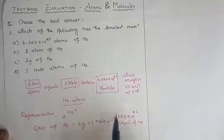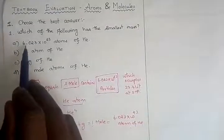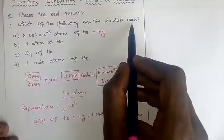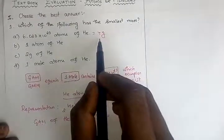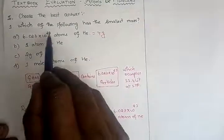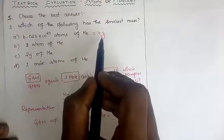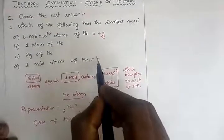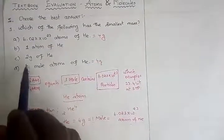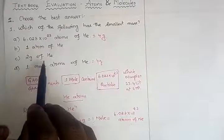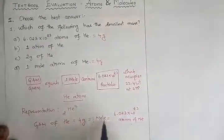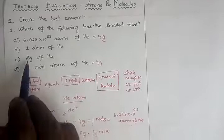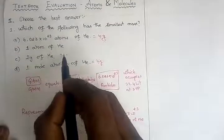Using this concept: option (A), 6.023 × 10²³ atoms of helium, is nothing but 4 grams. Similarly, option (D), one mole of atoms of helium, also weighs 4 grams. Now, what about 2 grams of helium? That is smaller. Since 4 grams equals 1 mole, 2 grams equals half a mole. So option (C) has a mass of 2 grams.